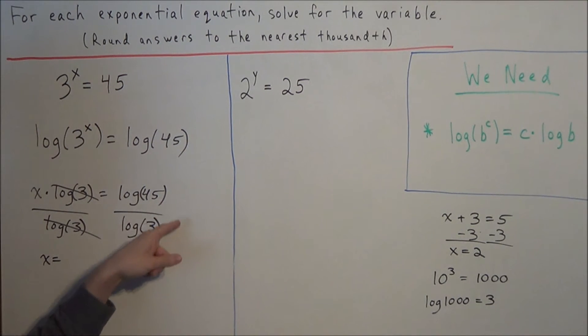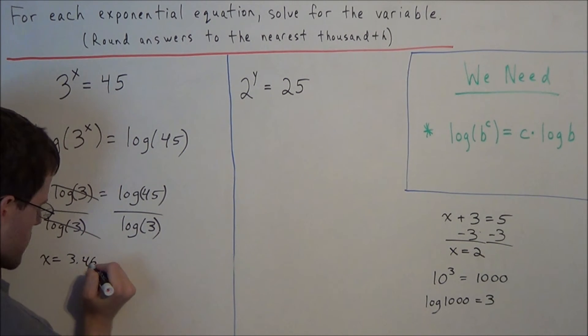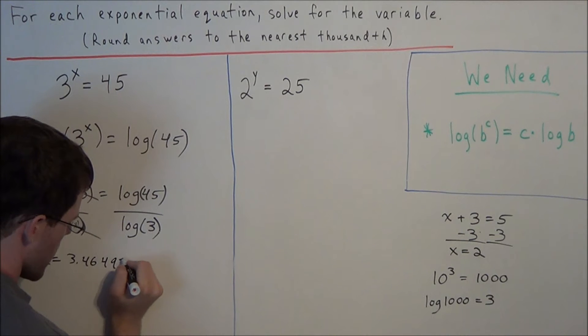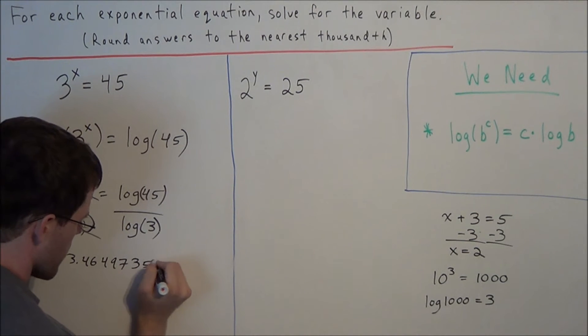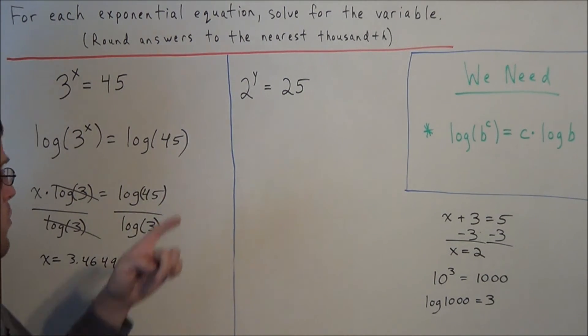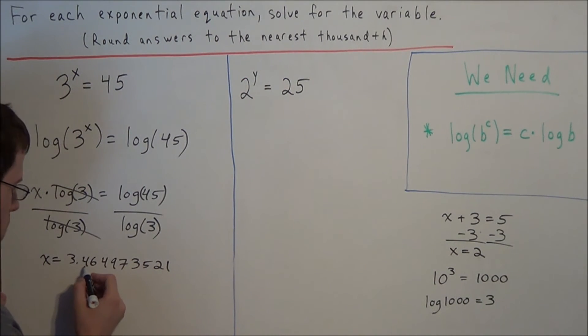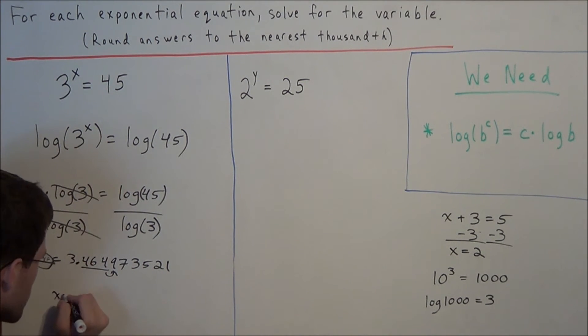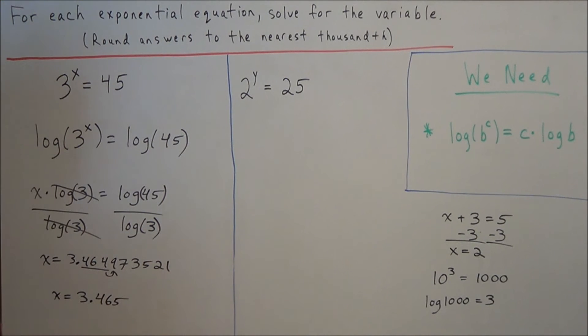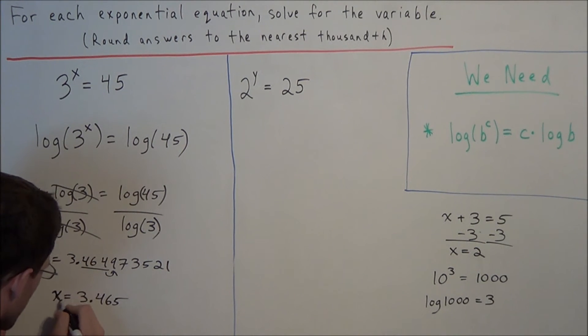Well this you definitely need to punch in your calculator unless you have a table with a list of logarithms, and when we simplify this we're going to get 3.46497 and then 3521, and we need to round to the nearest thousandth. So we go out three digits after the decimal, that's the thousandth place, we look one digit to the right, it's a nine so this tells us to round up to 3.465. So we have x equals 3.465 and this is going to be our final answer for the first problem.